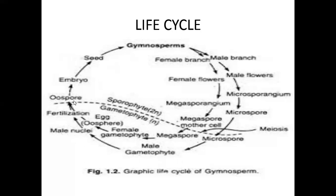A Diploid Zygote is formed, called an Oospore, produced by the fertilization of gametes. The Diploid Zygote develops into an embryo, that embryo develops into a seed, and the seed germinates into a sporophytic plant.